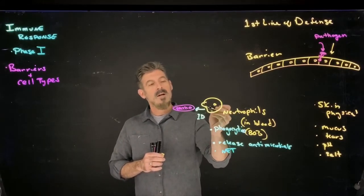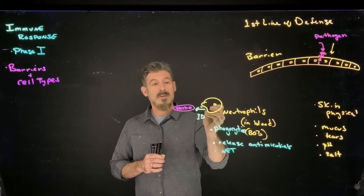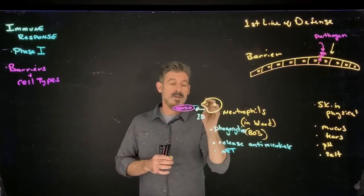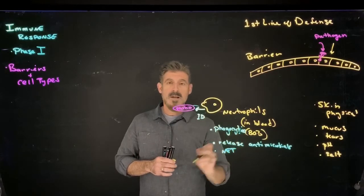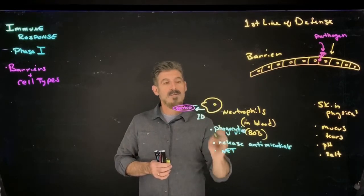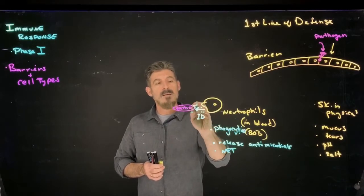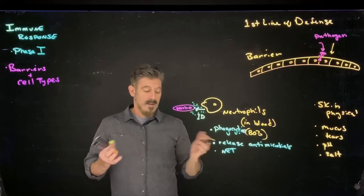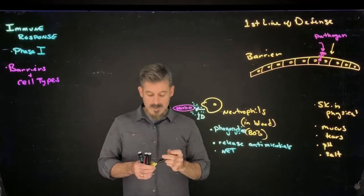They can release things called a NET, which is where the neutrophil releases a trap to the pathogen that grabs it, especially if it's too big for the neutrophil to phagocytize. Essentially the neutrophil is going to try to destroy the cell, and that may work and it may not.